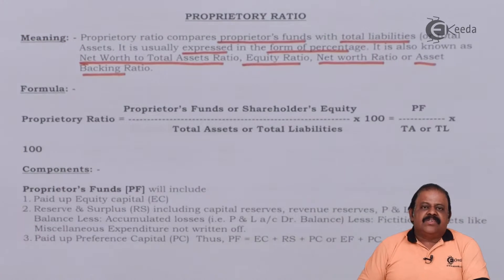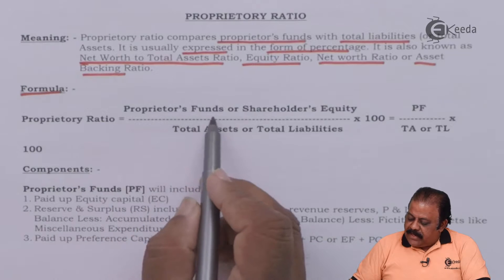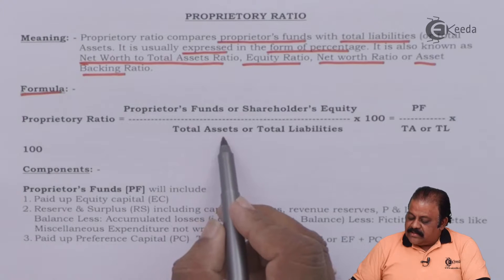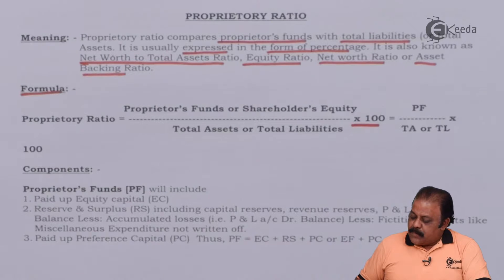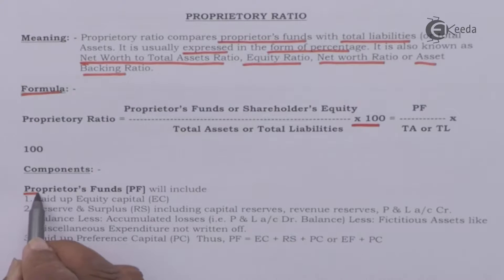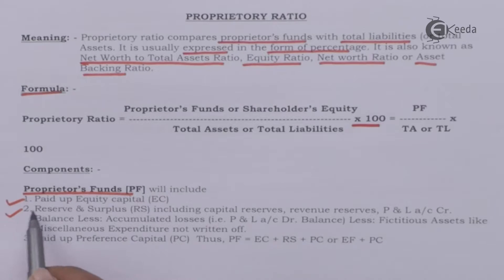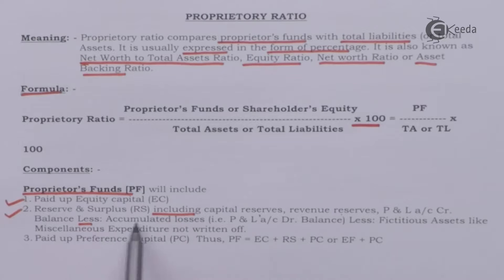These are the various names used for proprietary ratio. The formula is: Proprietary Ratio = Proprietors' Fund (or Shareholders' Equity) divided by Total Assets or Total Liabilities, multiplied by 100. Its components — proprietors' fund — include paid-up equity share capital, reserves and surplus including capital reserve, revenue reserve, and profit and loss account credit balance.